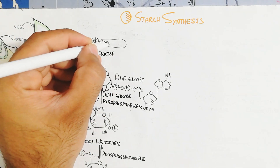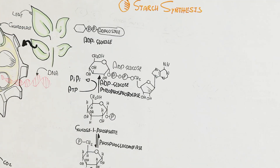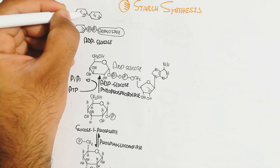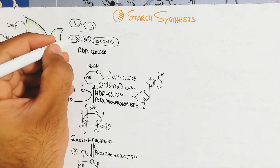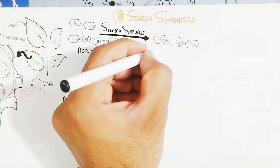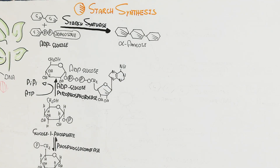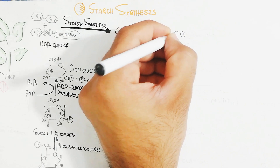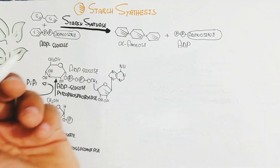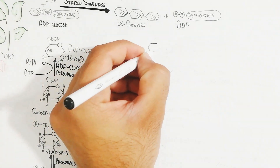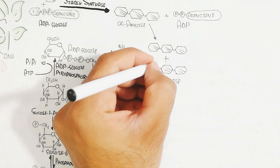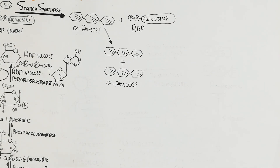ADP-glucose combines with another disaccharide or existing starch chain, and one by one glucose units are translocated in the presence of starch synthase, forming alpha-amylose. ADP is released and recycled back to form ADP-glucose again via the same glucose-1-phosphate reaction.